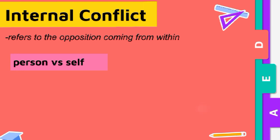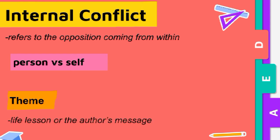Another term is theme. It is the lesson or the author's message about the way human life is presented in the story. It also implies a universal view of life which the reader can accept, challenge, or question. For example, the theme of 'The Parable of the Sadhu' is that the happiest people are those who are content with their lives regardless of their status.